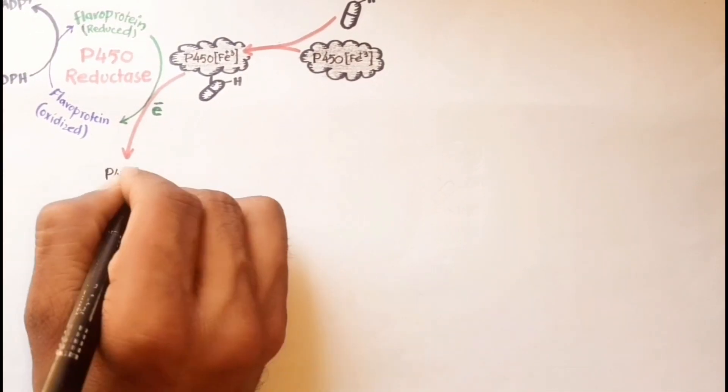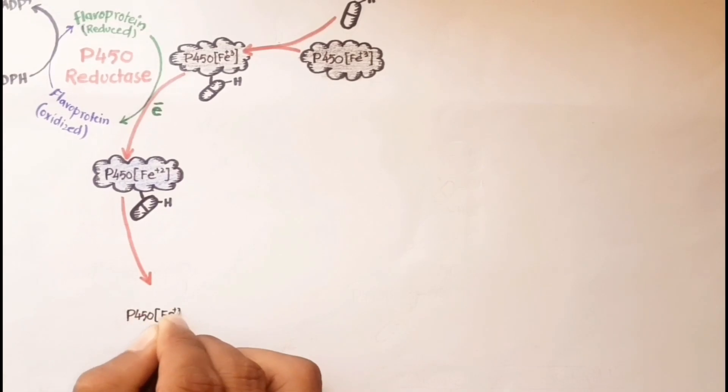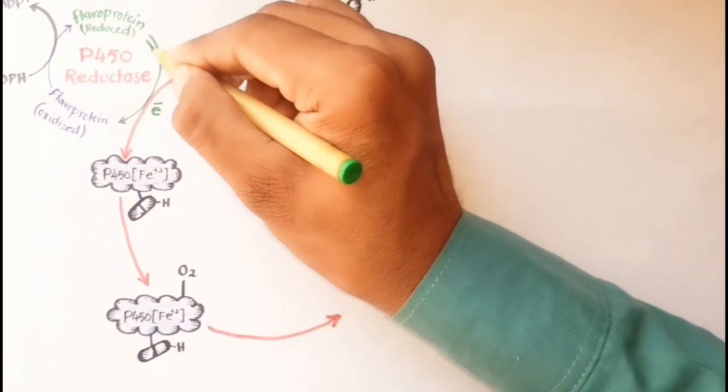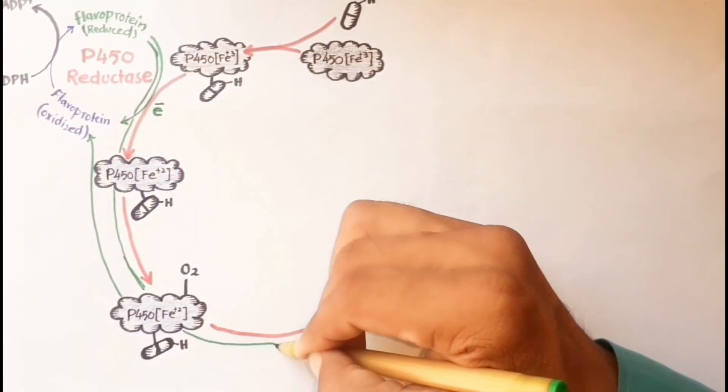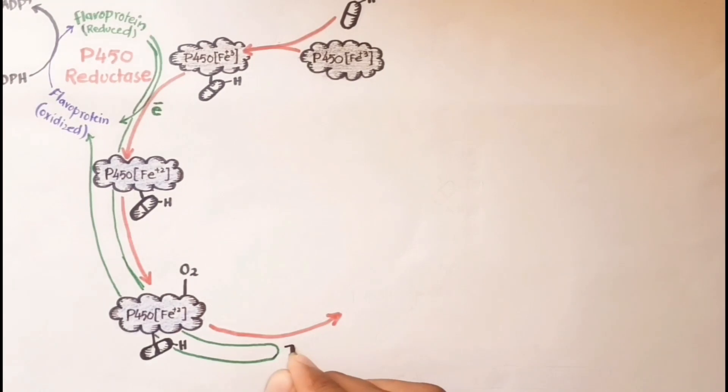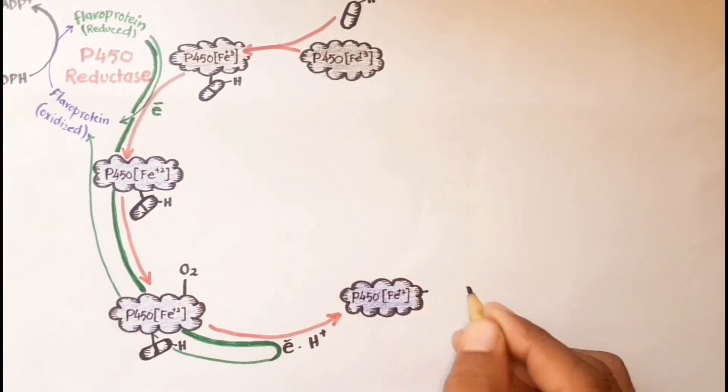In the third step, it combines with molecular oxygen and subsequently combines with a proton and a second electron from flavoprotein P450 reductase to form an activated oxygen P450 substrate complex.